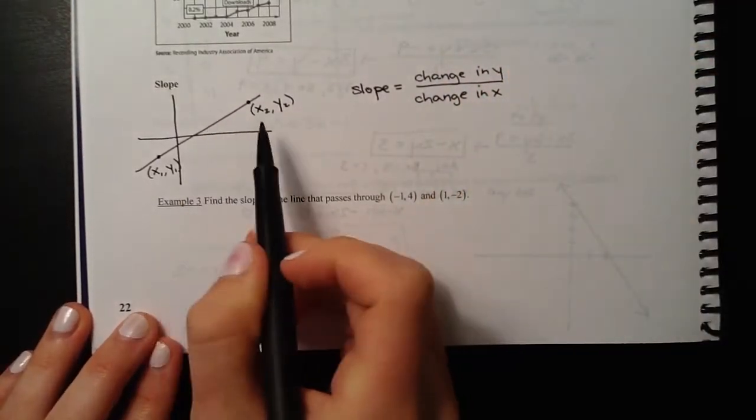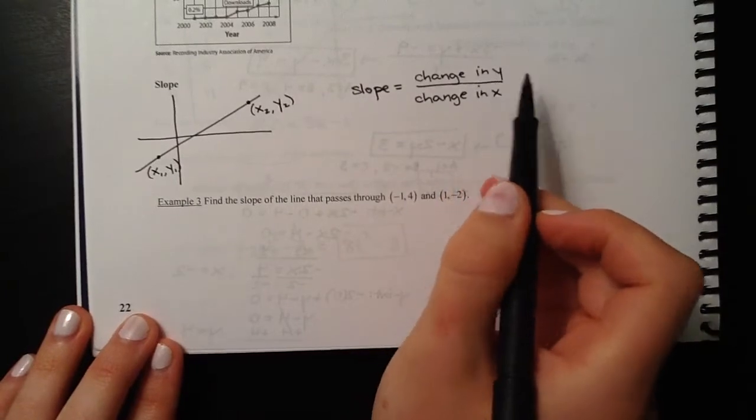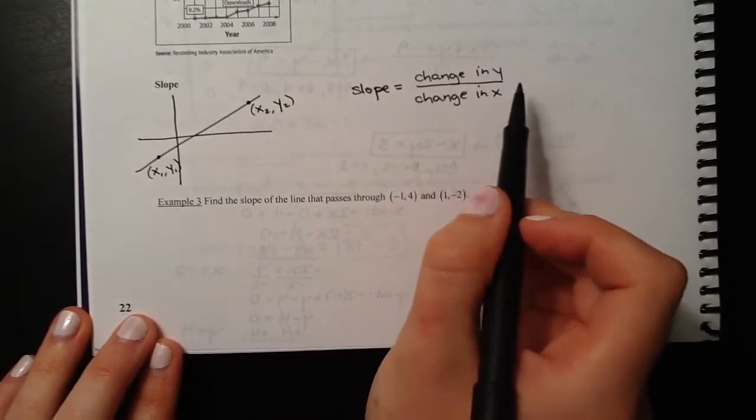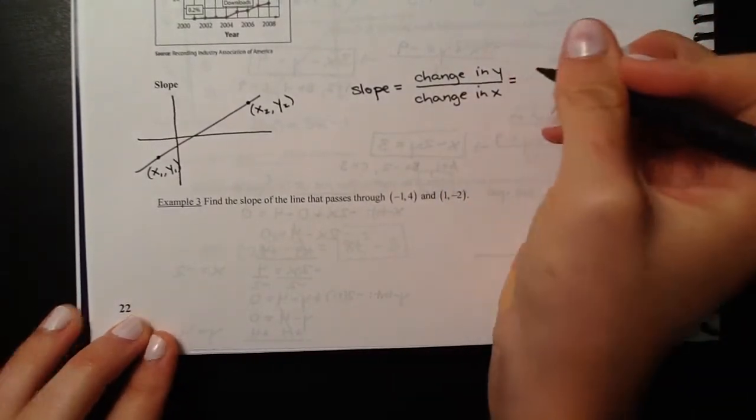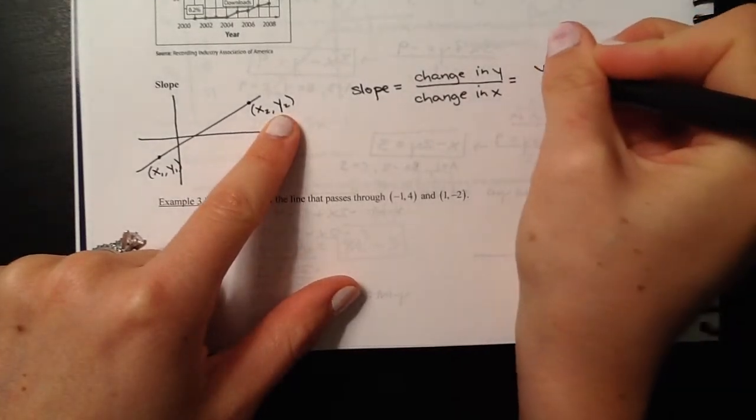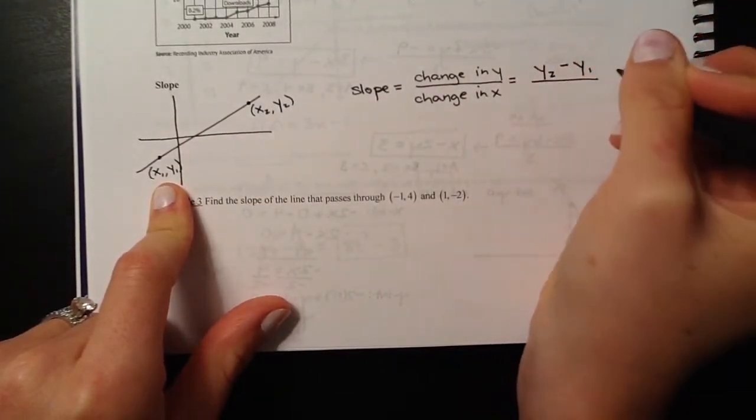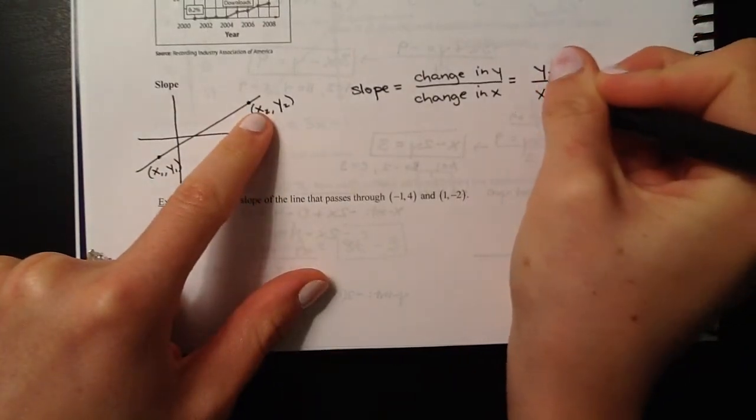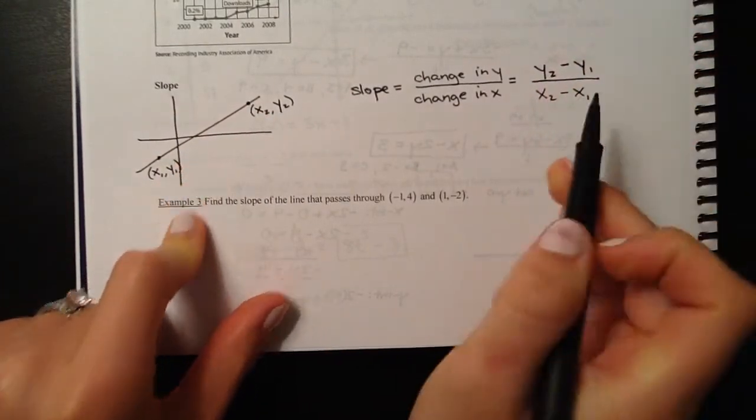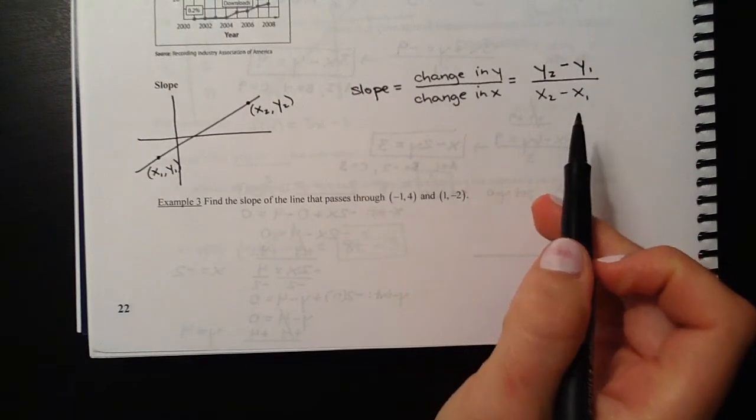Since we're on a coordinate plane, you can think of this as the change in the two y coordinates and the change in the two x coordinates. Change in y means the ending y value minus the starting y value in the numerator, and then change in x is the ending x value minus the starting x value. This formula I'm really hoping is familiar.